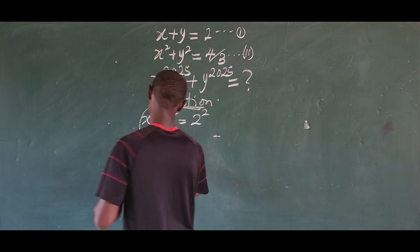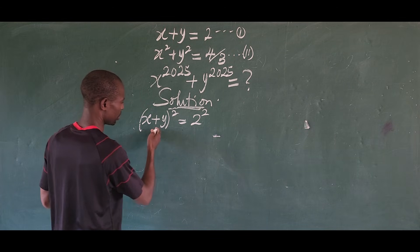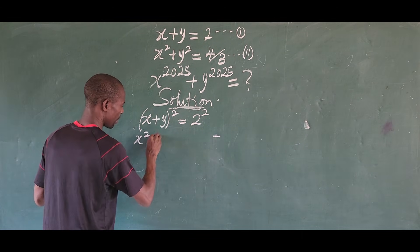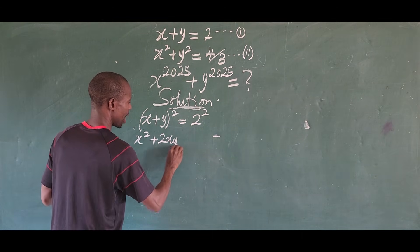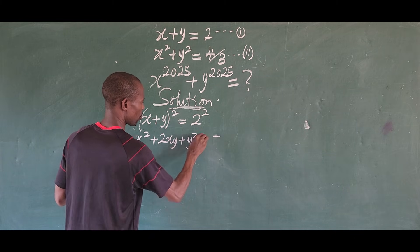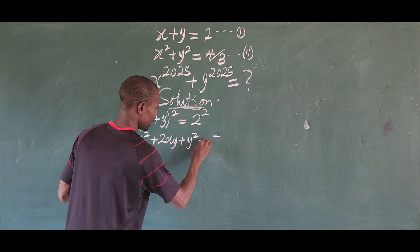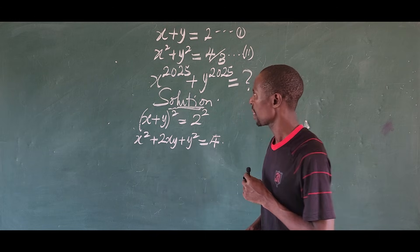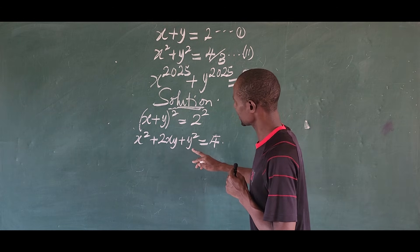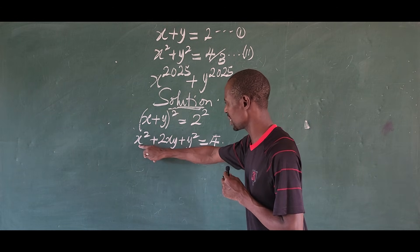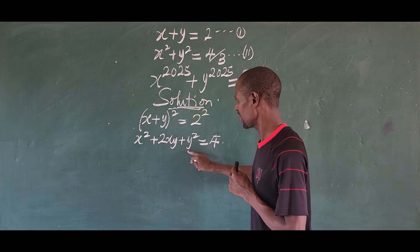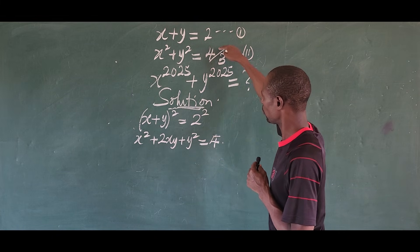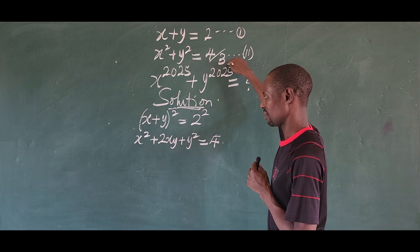Using the algebraic identity to expand, we get x squared plus 2xy plus y squared equal to 4. We can substitute x squared plus y squared using equation 2, replacing it with 4 over 3, giving us 4 over 3 plus 2xy equals 4.